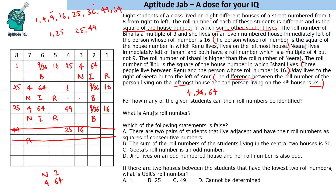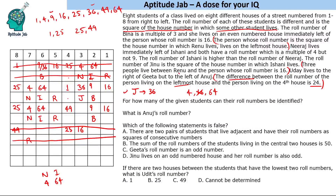The roll number of Jenu is the square of the house number in which Ishani lives. If Ishani lives on house 2, Jenu's roll number would be 4 — not possible since 4 is already taken. If Ishani lives on house 6, Jenu's roll number is 36. So Jenu has roll number 36. This means Beena must have roll number 9, not 36. We can then place Jenu (36) in the remaining open position. The remaining unfilled roll numbers are 49 and 1.